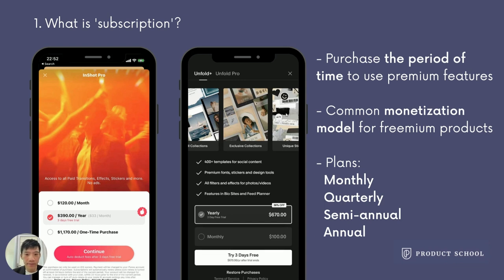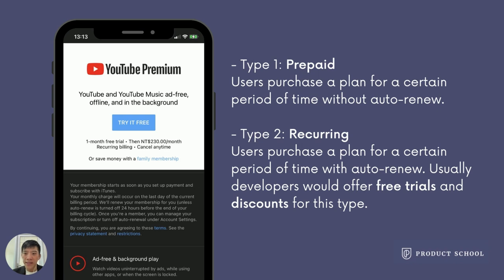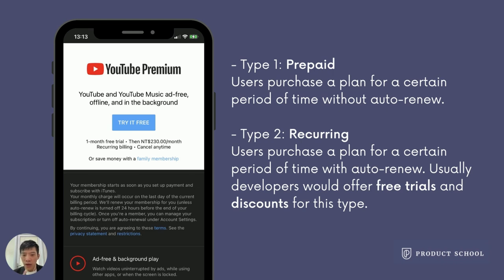There is no right or wrong in having only one or a few plans for a product. Here are two key concepts: one is prepaid, where users purchase a plan for a certain time without auto-renew. The other is recurring, where users purchase a plan for a certain period with auto-renew. Recurring plans usually come with free trials and discounts because they may have a higher subscriber retention rate. Prepaid usually accompanies a higher trial rate but lower retention rate because users have to manually subscribe again. In terms of LTV, recurring users might have a higher LTV.